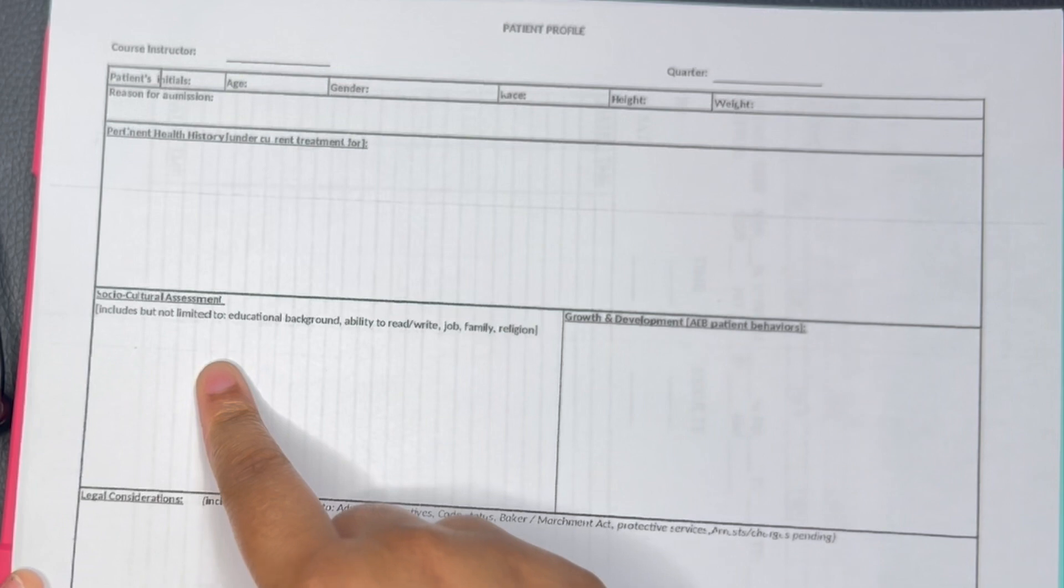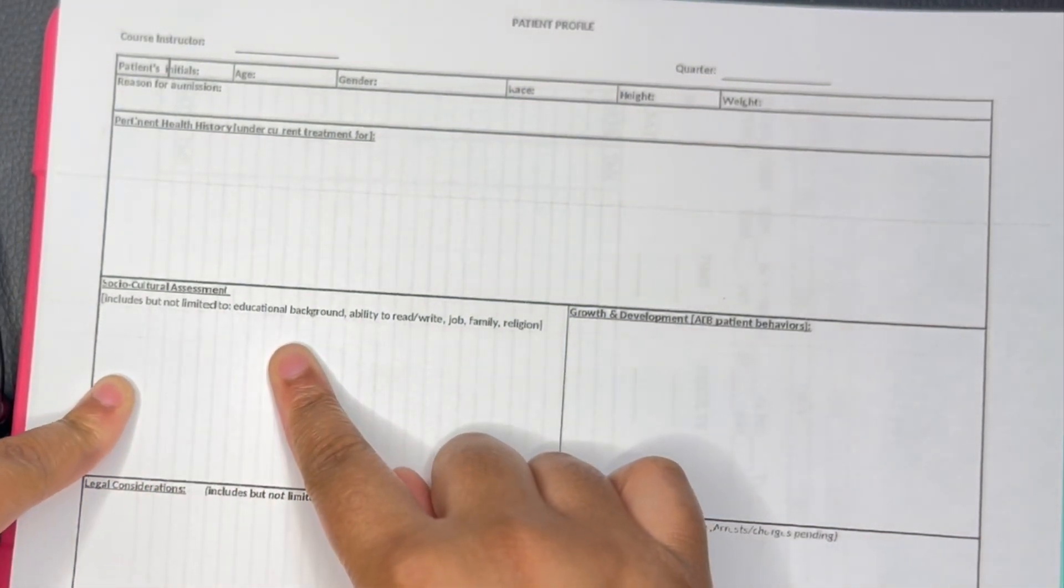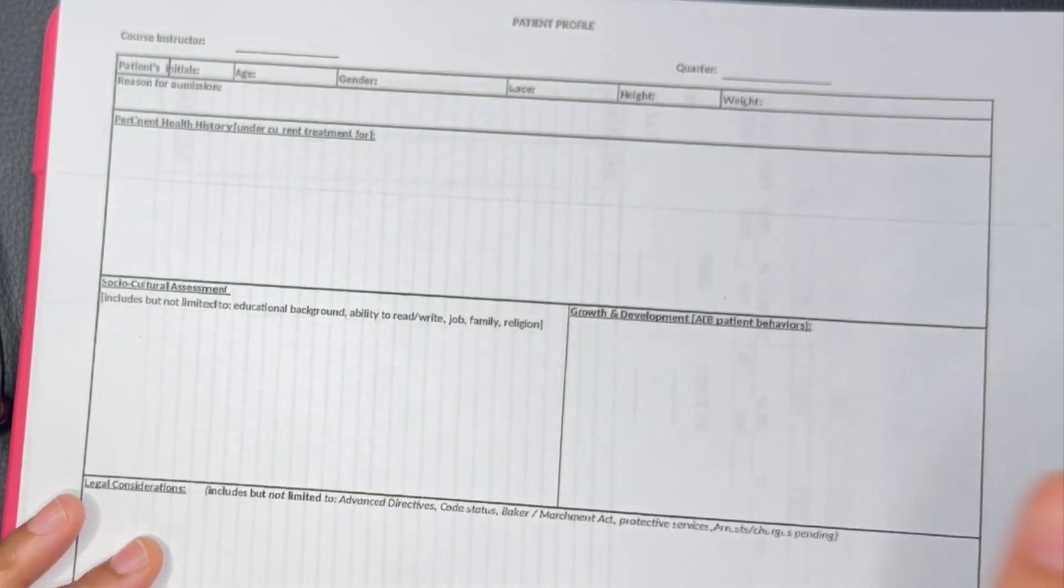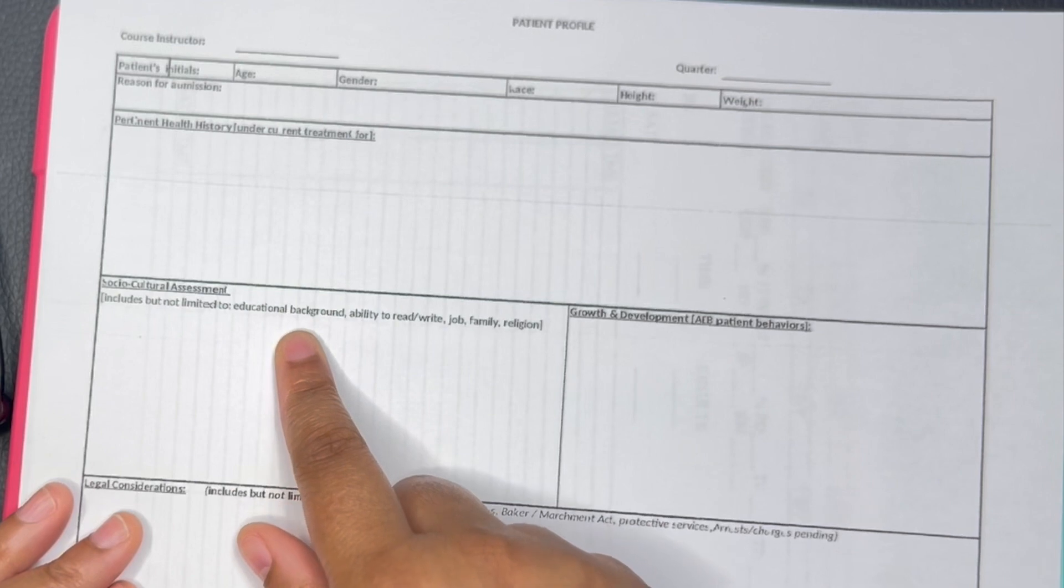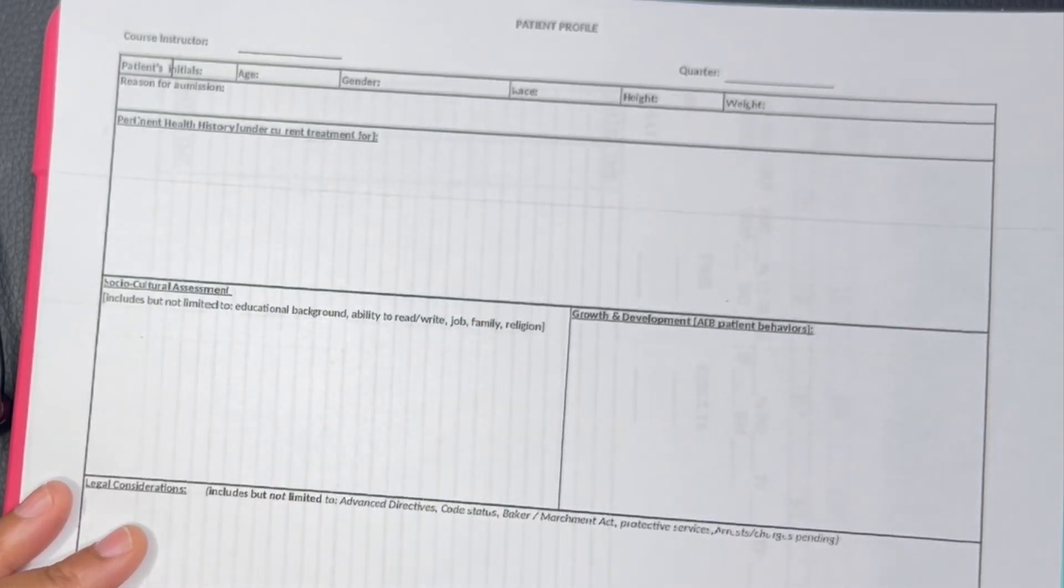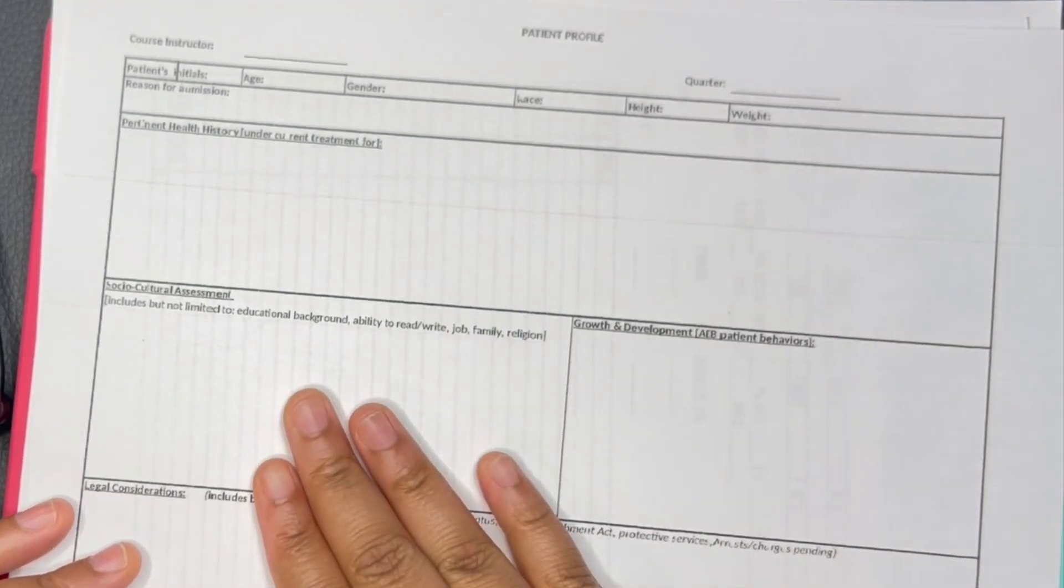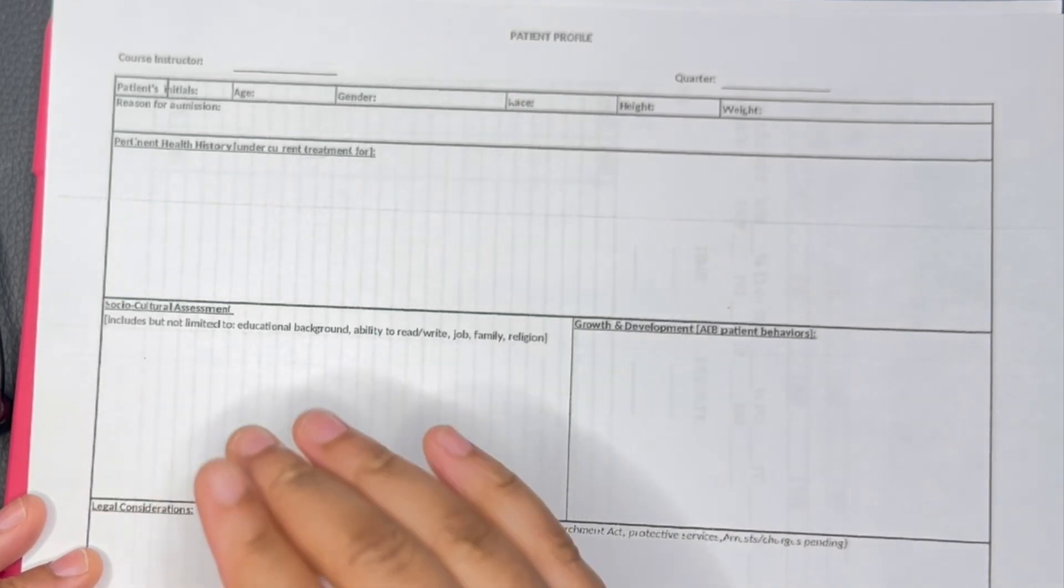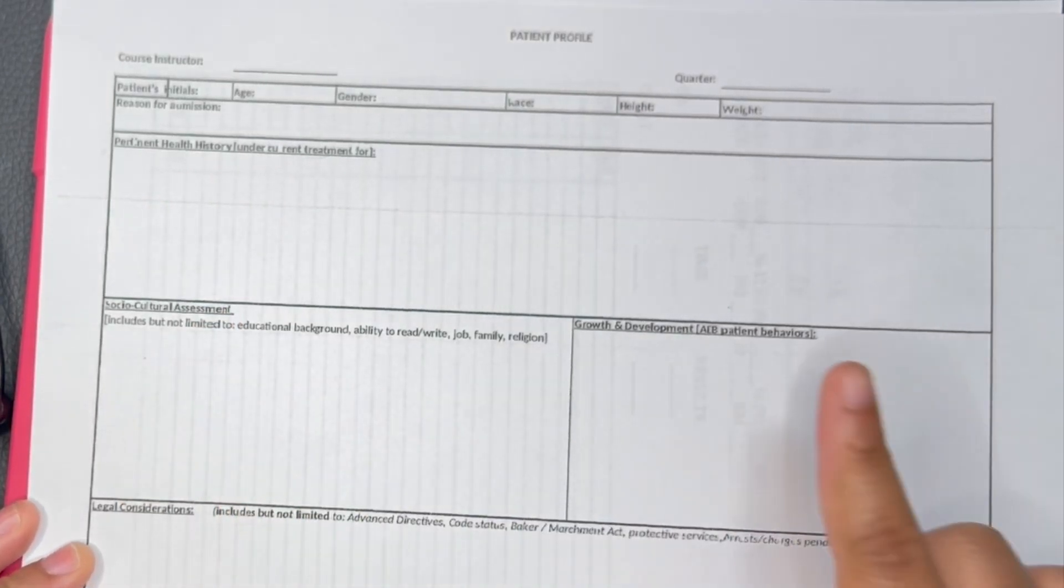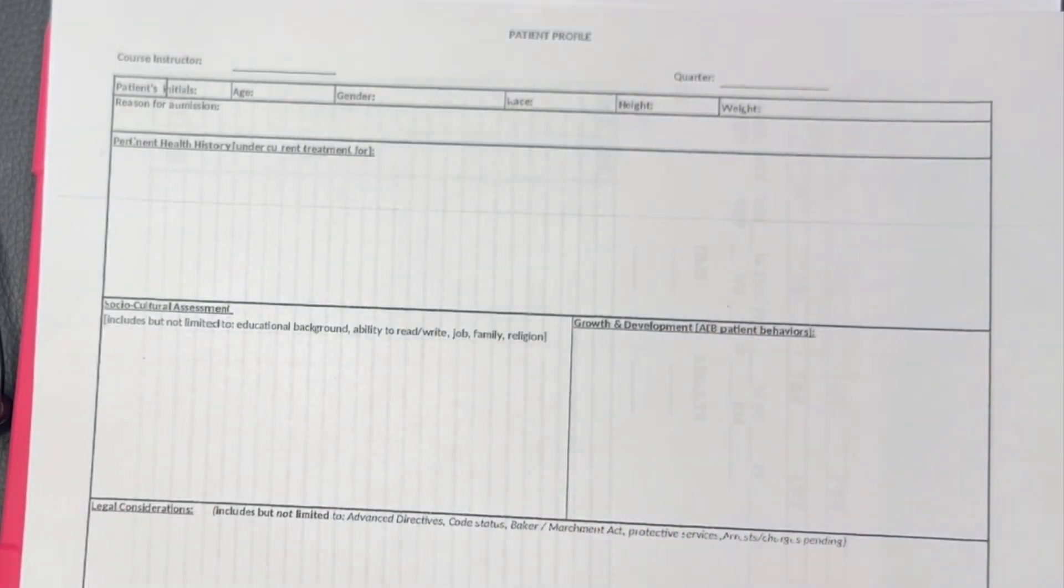Right here is the social cultural assessment. That's more like the education background, is the patient in school, what's the patient's high level education, can they read, write, do they have a job, their family history, their religion, whether they smoke, whether they drink. All this stuff will go here.